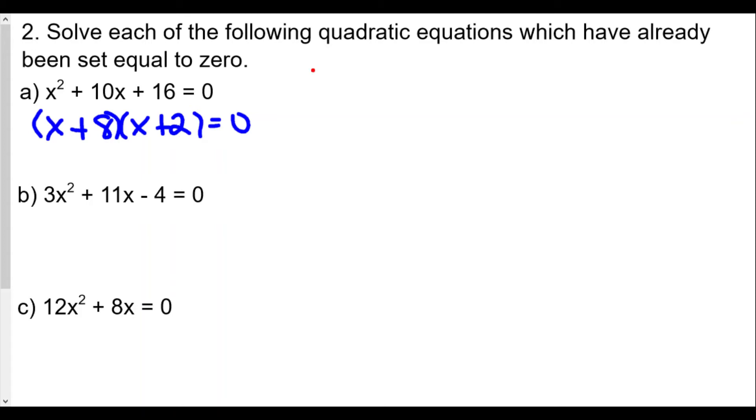So we set each of those factors equal to zero. x plus 8 equals 0 and x plus 2 equals 0. Subtract 8 on both sides, x equals negative 8, that's one answer. Subtract 2 on both sides, x equals negative 2, that's the other answer. So these are solutions for A. It's about factoring.